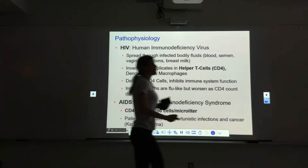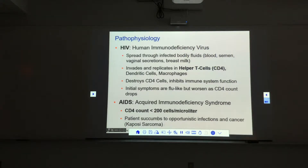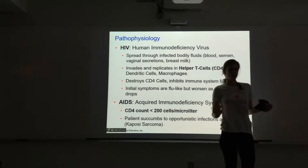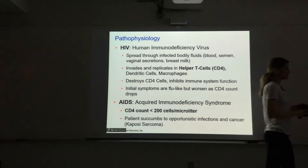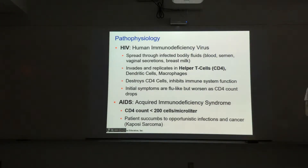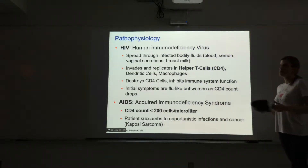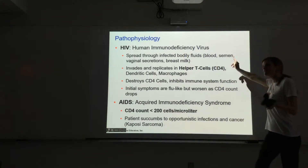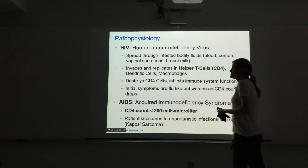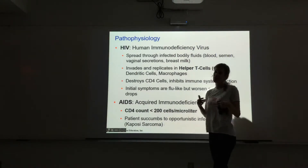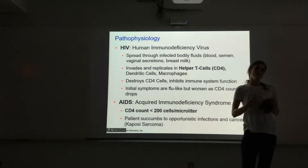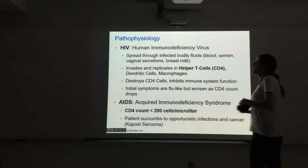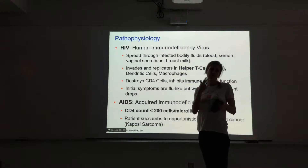HIV is spread through bodily fluids — blood-to-blood contact. Years ago it was spread through transfusions, but not anymore; we scan the blood we get for transfusions. IV drug use — if you're sharing needles with other IV drug users, you can get it that way. Sex, via semen and vaginal secretions, and it's more common in anal sex because of tearing that occurs. It can be spread in breast milk. It is not spread in saliva.